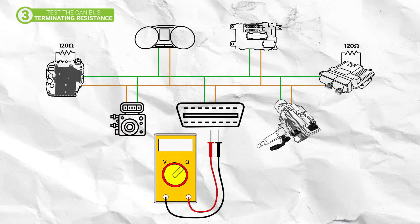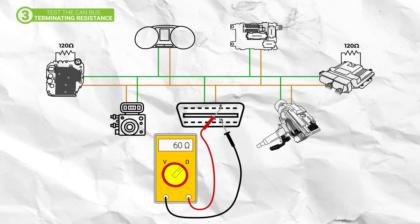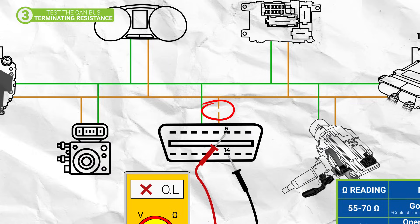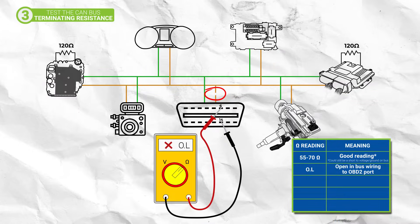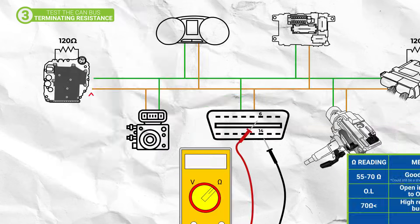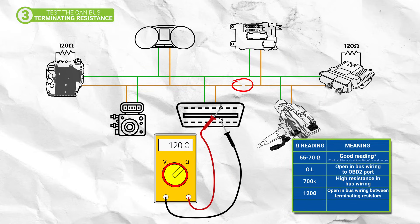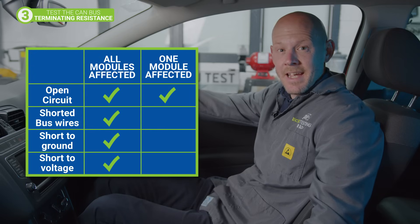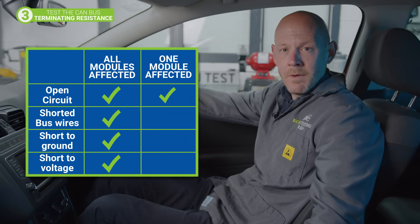Next, perform a resistance check between the two CAN lines at pins 6 and 14 on the OBD2 port. Due to the two terminating resistors at either end of the network, the reading here should be around 60 ohms. If the reading is open circuit, then there is likely a fault in the wiring between the DLC and the main CAN lines. If the reading is higher than 60 ohms but not 120 ohms, then there is high resistance somewhere on the network, usually caused by bad terminal contacts. If the reading is 120 ohms, then there is an open circuit somewhere on the bus between the two resistors. However, if the reading is lower than 60 ohms, then there is a short between CAN high and CAN low.